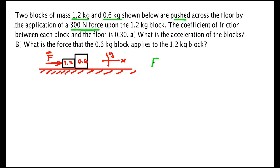So F is 300 newtons and mass A, I'm going to call it, is 1.2 kilograms, mass B is 0.6 kilograms. It says that the coefficient of friction between each block and the floor is 0.3, so μ is 0.30.